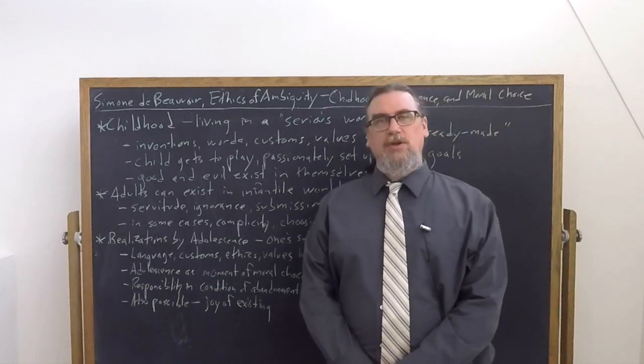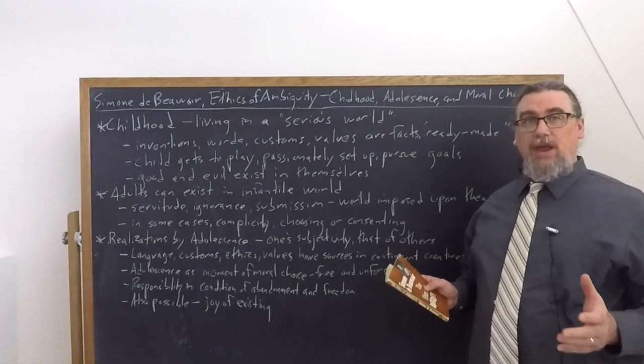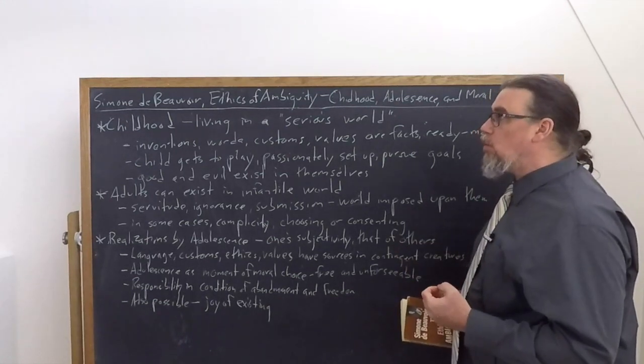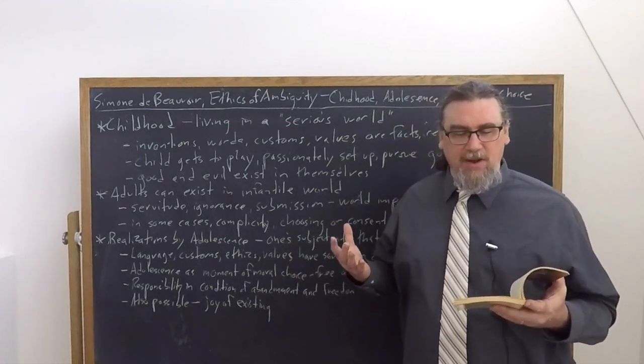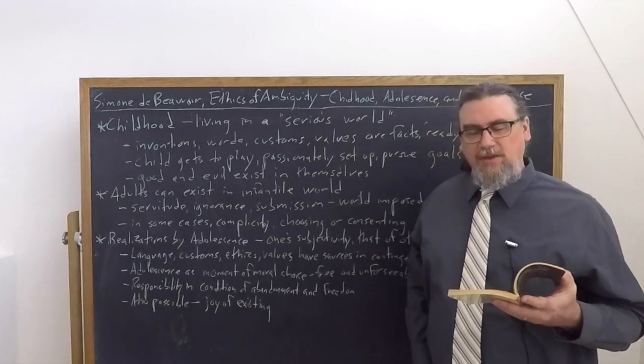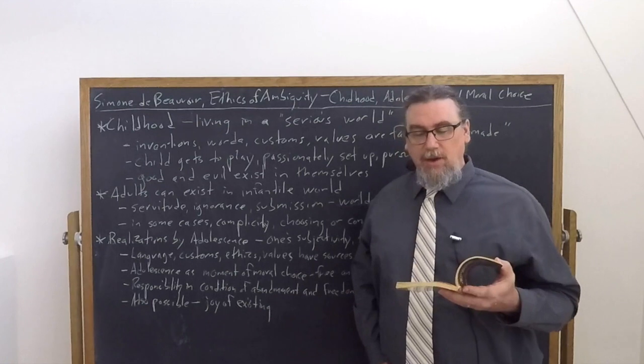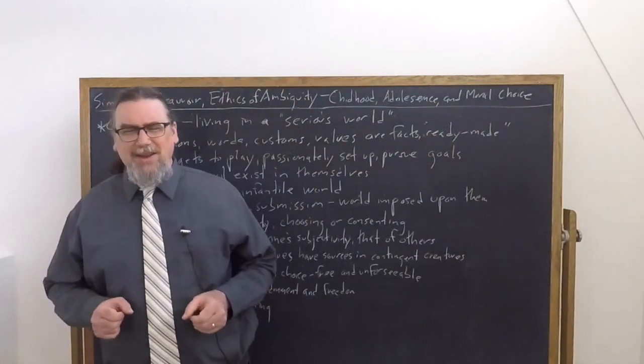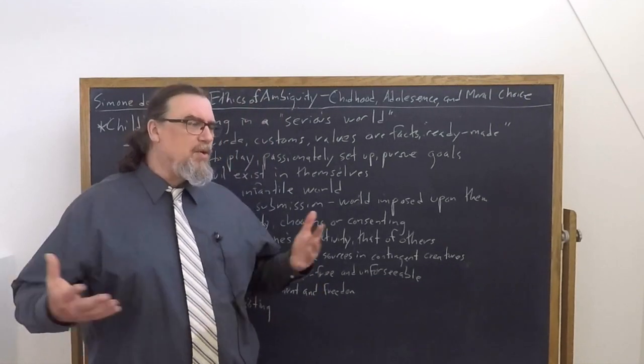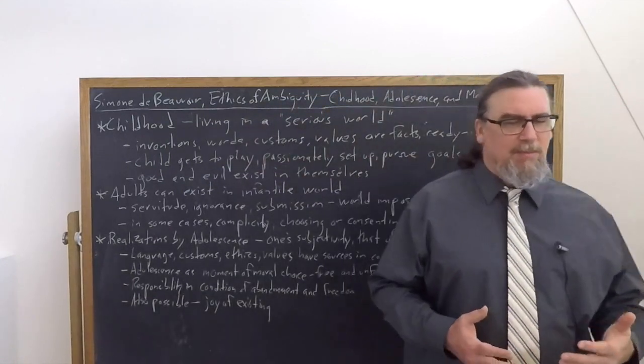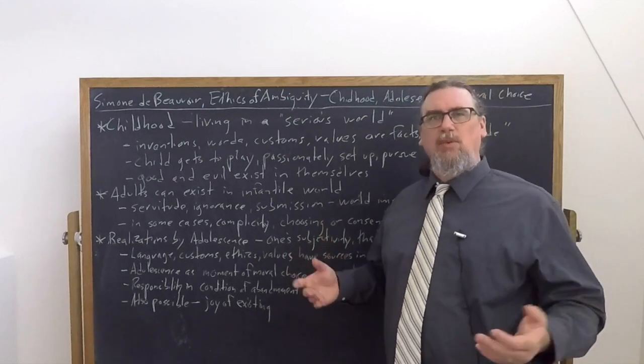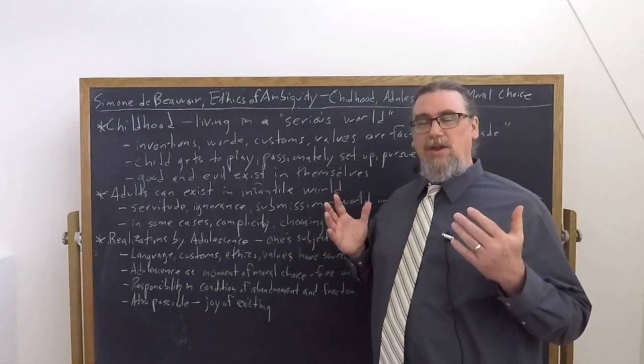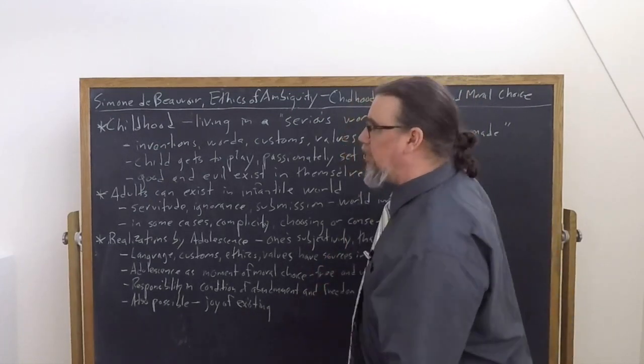Simone de Beauvoir begins Section 2 of The Ethics of Ambiguity by talking about childhood and adolescence and the condition of people who are kept within what she calls the infantile world. She begins with a reference to Descartes: man's unhappiness is due to his having first been a child. The unfortunate choices which most men make can only be explained by the fact that they have taken place on the basis of childhood.